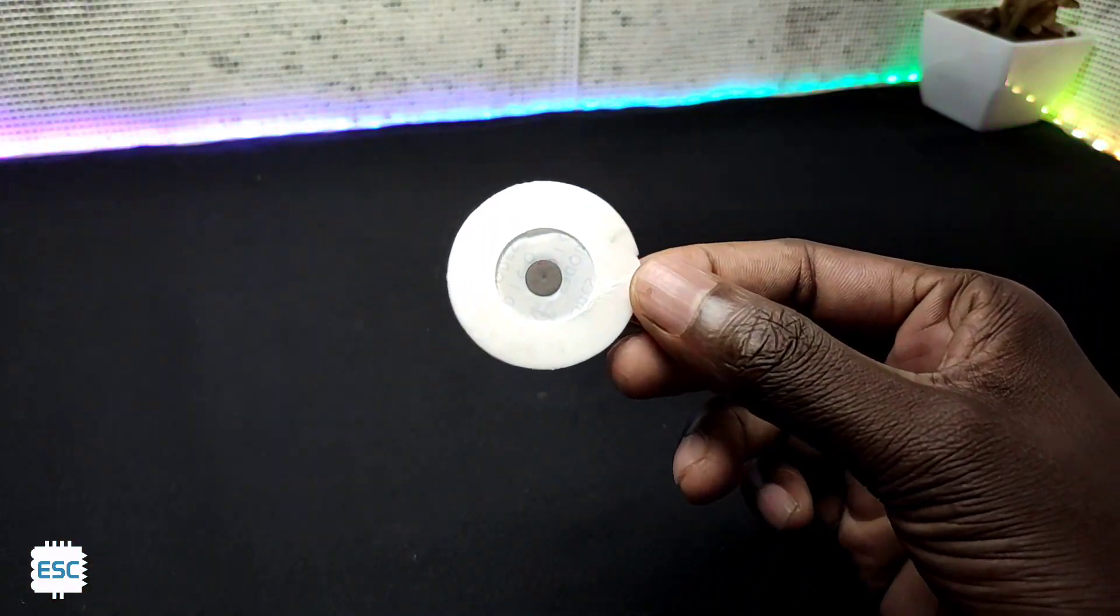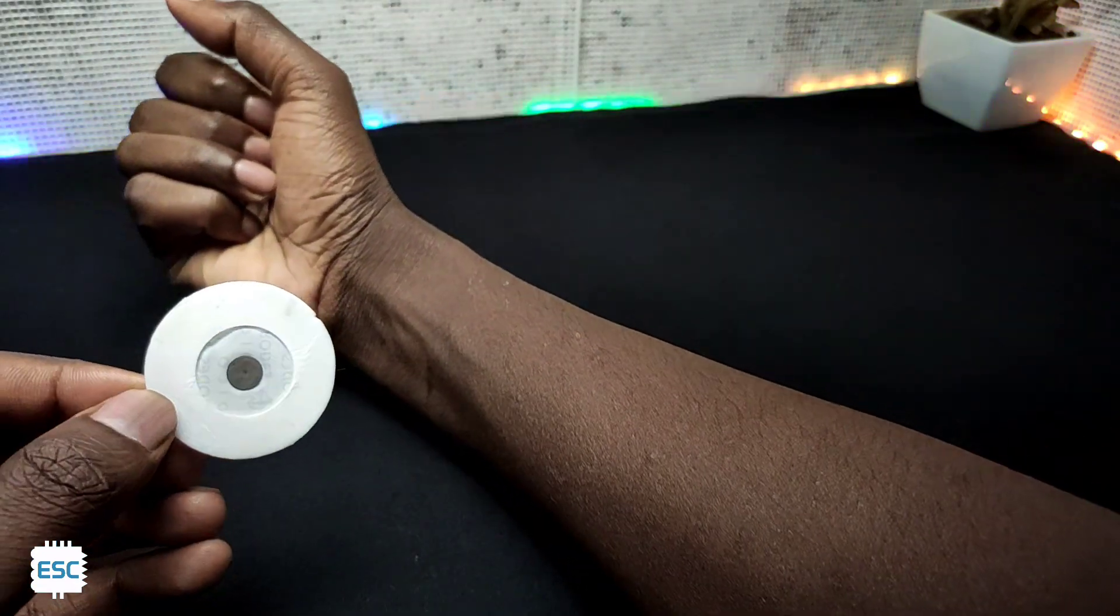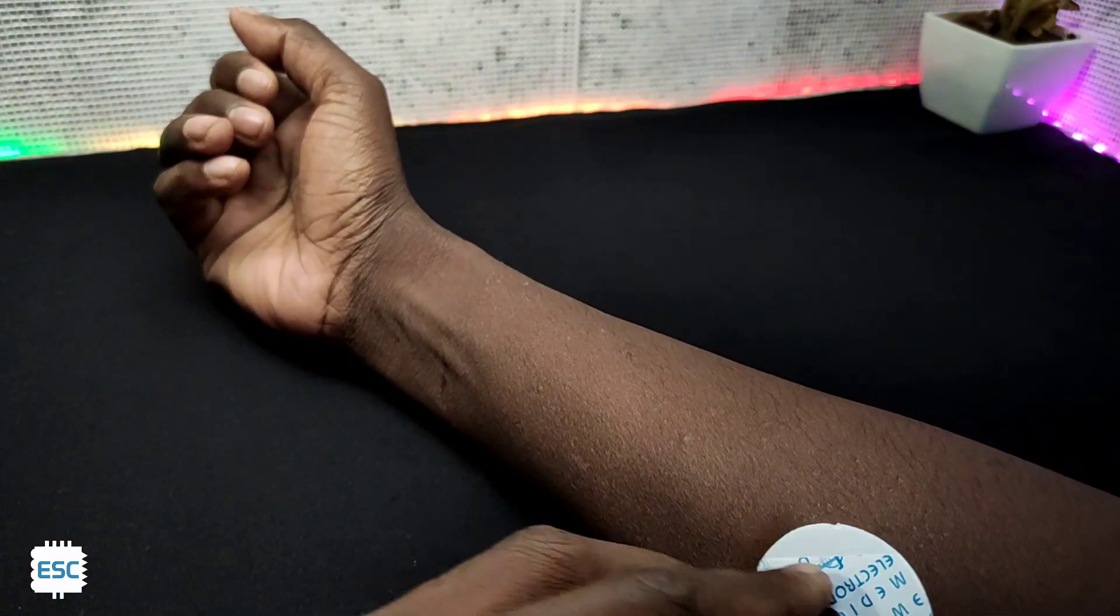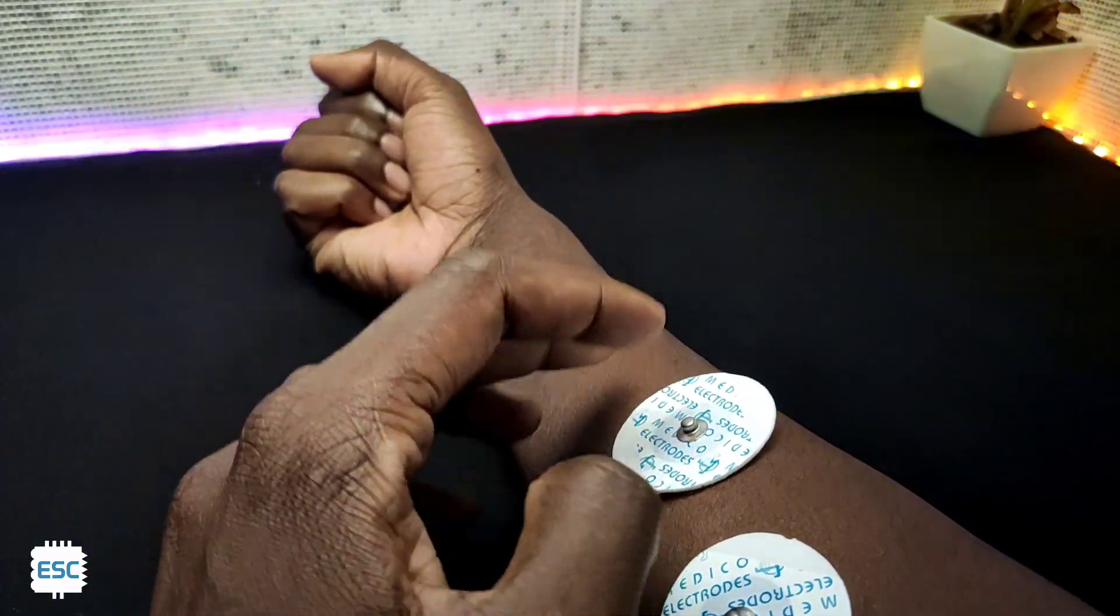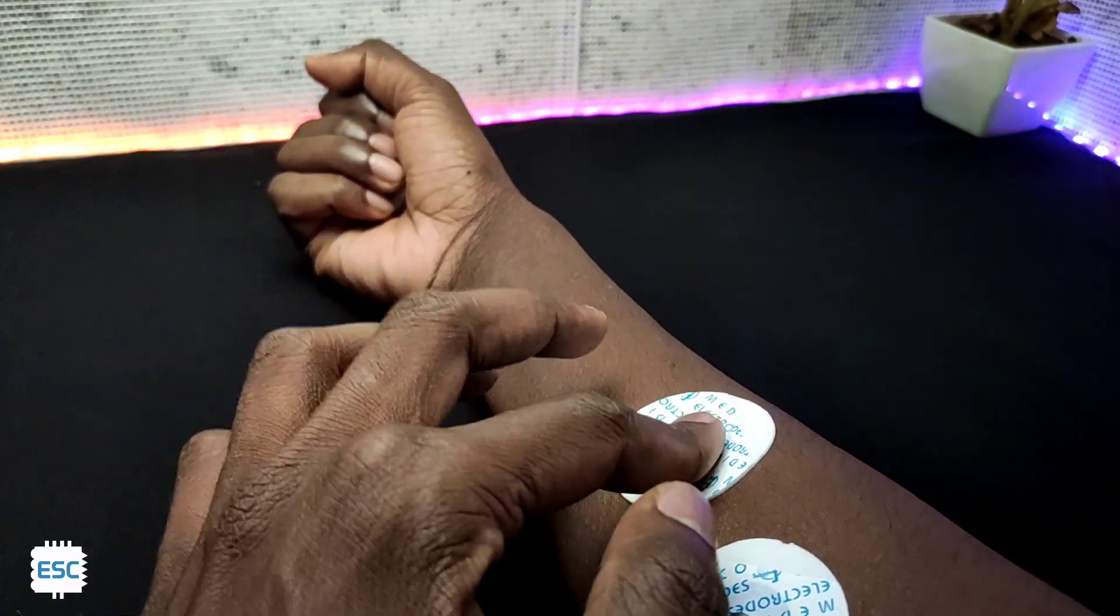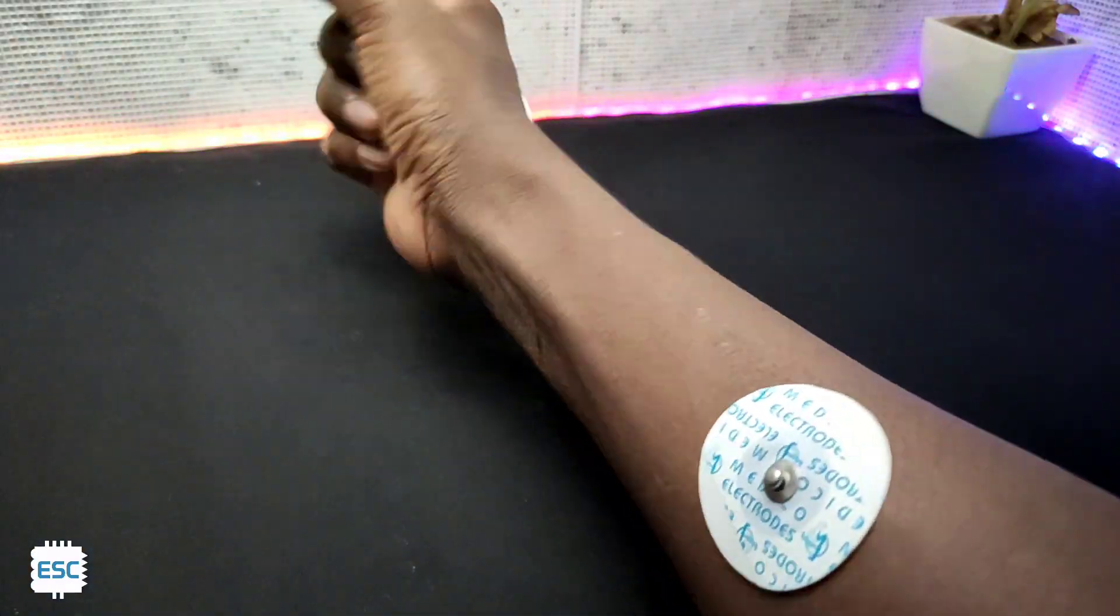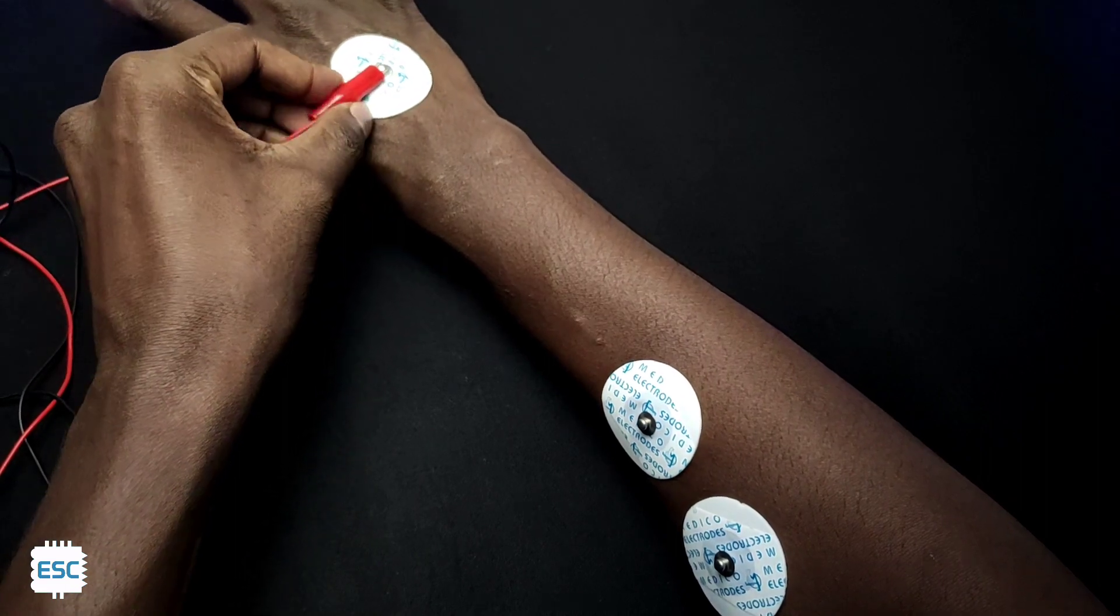Now let's open the covering of the gel electrode and place it on my arm. I placed the electrode at that position because the ulnar nerve goes through there. Next, I placed one on the dorsal side of the palm. Now let's connect the probes to the electrodes.